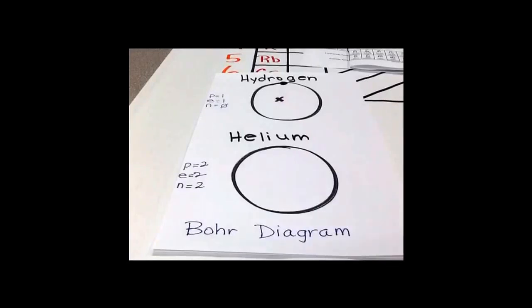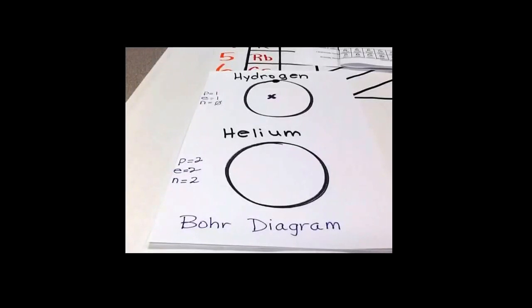The Bohr diagram allows us to look at the parts of an atom and especially the electrons. The electrons are very important because they help us determine reactivity of that element or atom.